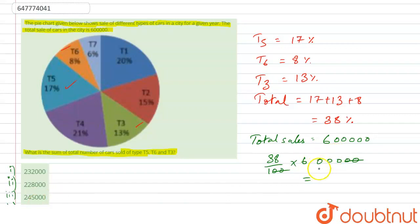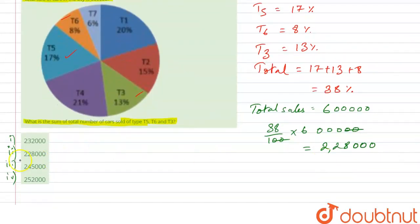So 6,000 into 38 is 2,28,000. So this many cars are of T5, T6 and T3 type. Let's see - option number 2 is the correct answer. Thank you.